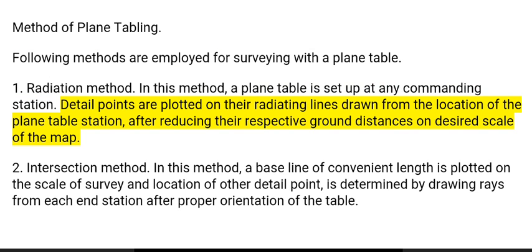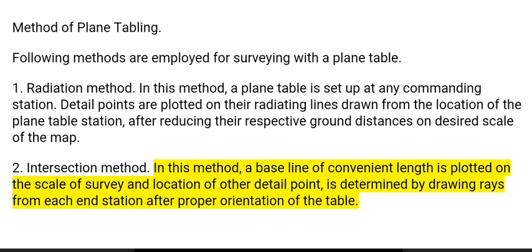2. Intersection method: In this method, a baseline of convenient length is plotted on the scale of survey, and the location of other detail points is determined by drawing rays from each end station after proper orientation of the table.